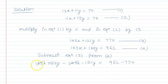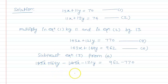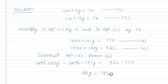That is, the 143x terms cancel out. 169 − 121 = 48, so 48y = 192.